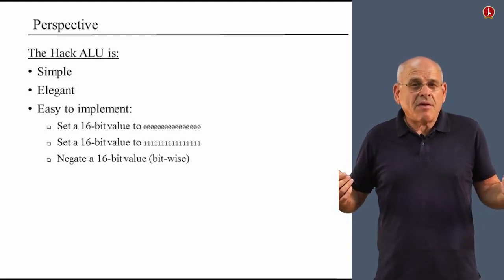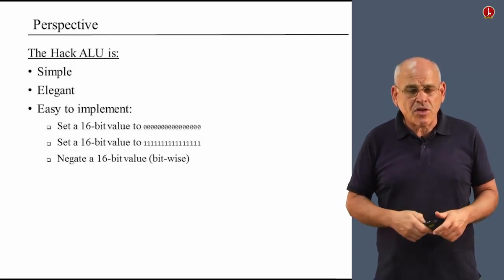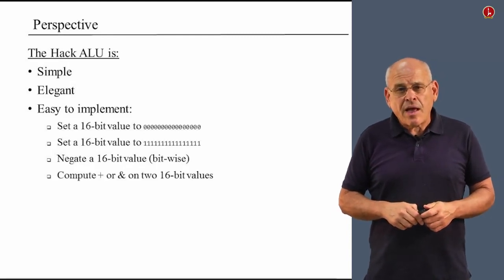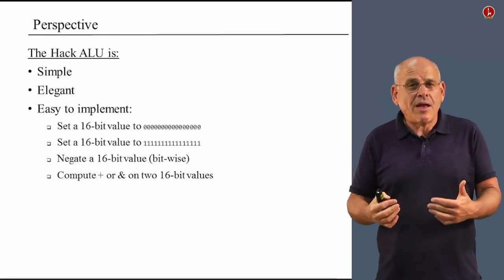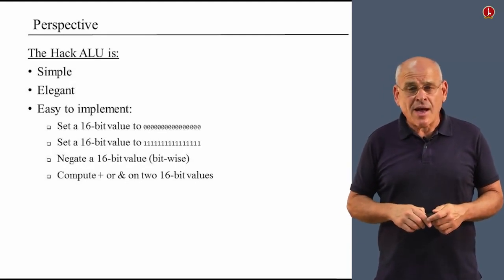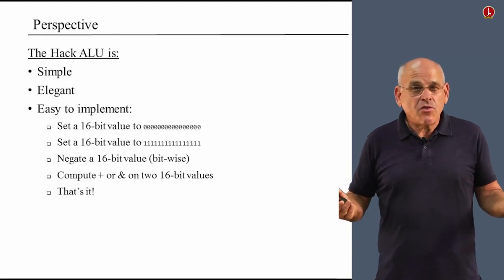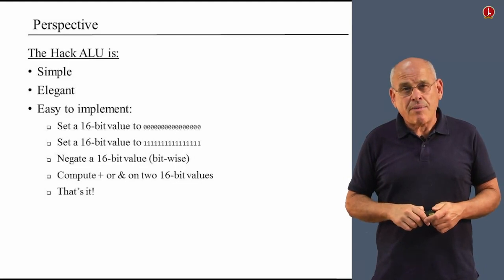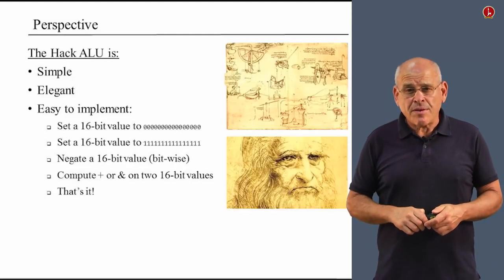We've done it before in project one. We built a gate that does exactly 16-bit negation. And in some other cases, we have to compute either plus or and. And these two computations are already taken care of using chips that you designed in previous projects. So, altogether, there's very little to do. Everything was done in one way or another by existing chips that you have already developed.